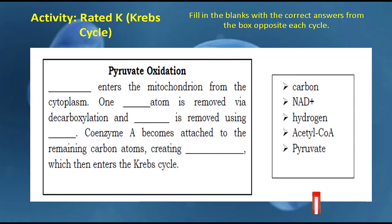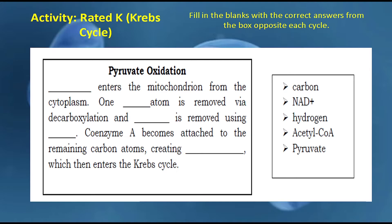Let's have a short activity. The title is 'Krebs Cycle: Fill in the Blanks.' Fill in the blanks with the correct answer from the box opposite each cycle. The answer: pyruvate enters the mitochondrion from the cytoplasm. One carbon atom is removed via decarboxylation and hydrogen is removed using NAD+. Coenzyme A becomes attached to the remaining carbon atoms, creating acetyl-CoA, which then enters the Krebs cycle.